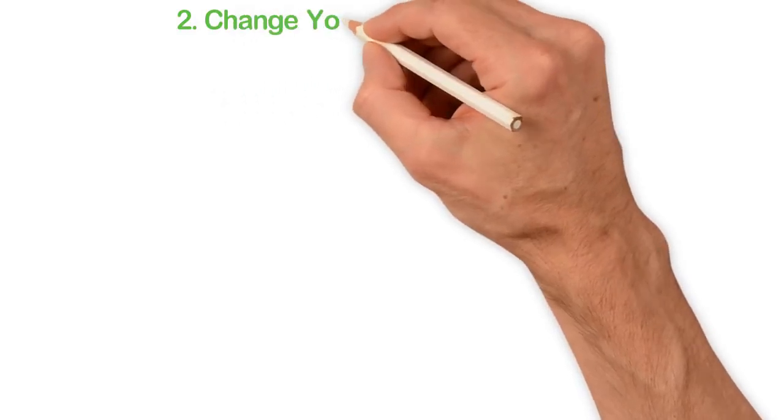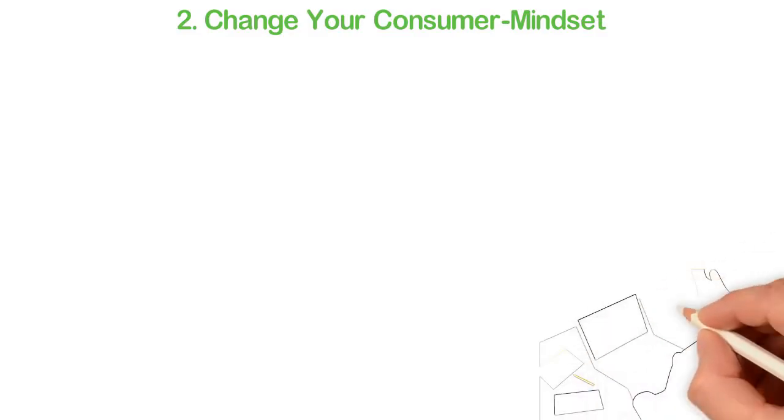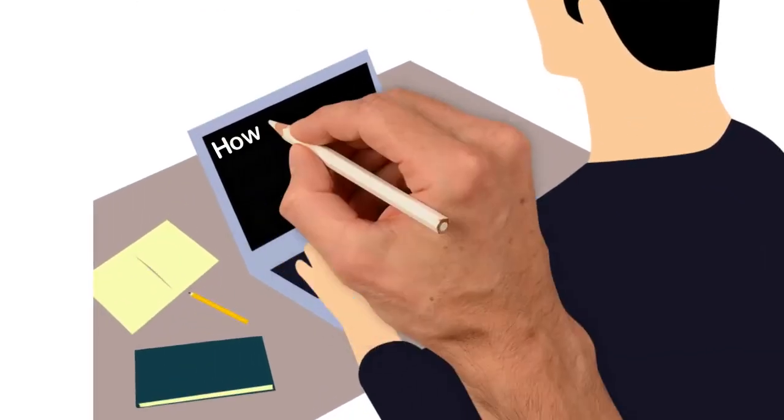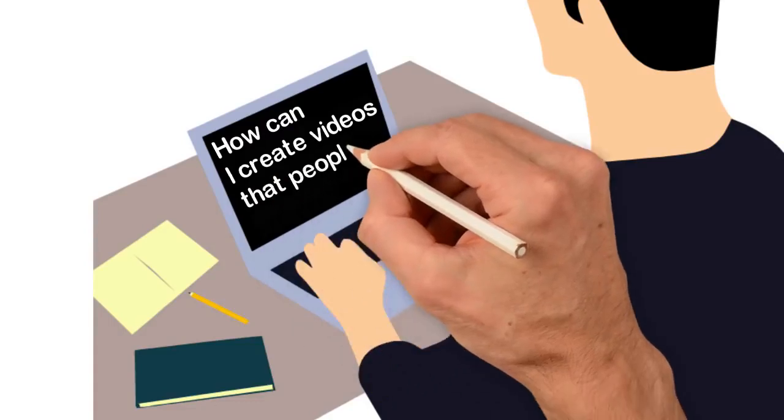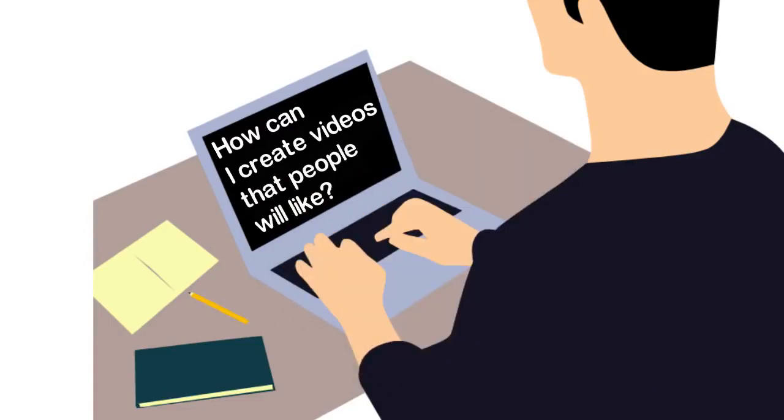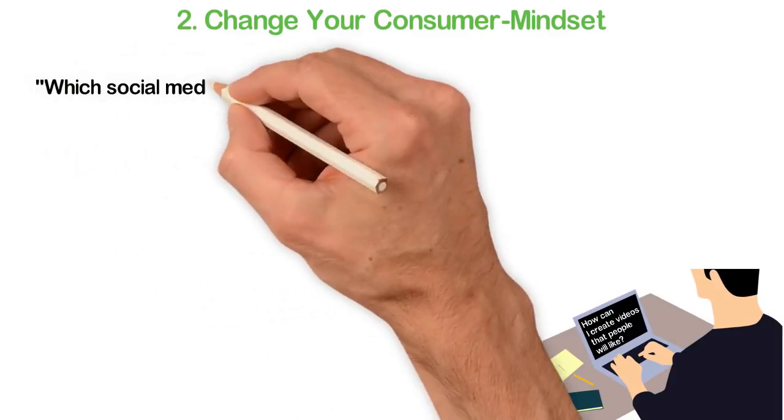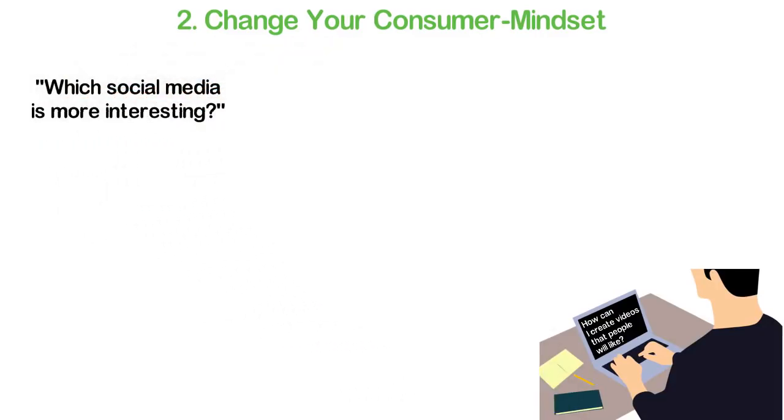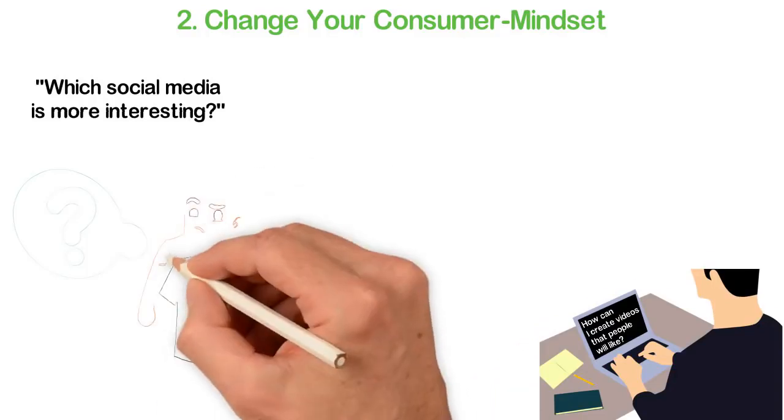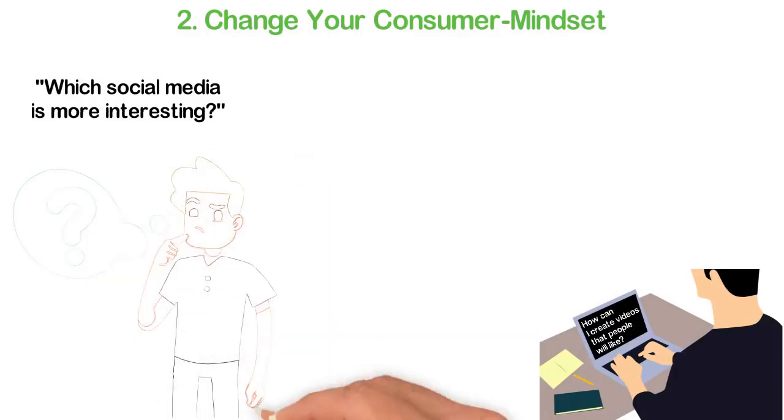Number 2: Change your consumer mindset. When I got to know about Facebook, my first concern was: can I sell through it? When I got to know about how popular YouTube is, my first question was: how can I create videos that people would like? Consumers don't think that way. Instead, they think: which social media is more interesting? Theirs is to consume, so they are not thinking of how to serve people and make money from them.